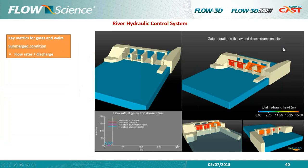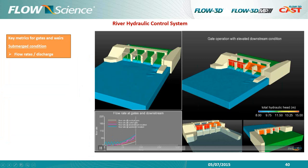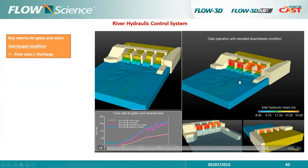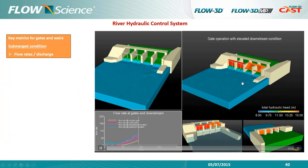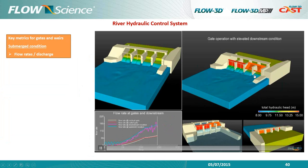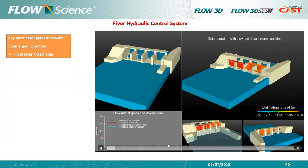Occasionally the downstream flow interferes with gate operation — for example, when a flooded or semi-flooded condition exists downstream. In these cases you can use 3D CFD to figure out in detail how this is impacting flow rates through the gates.